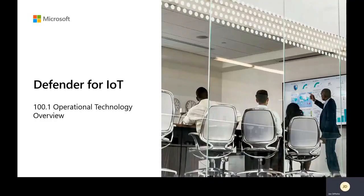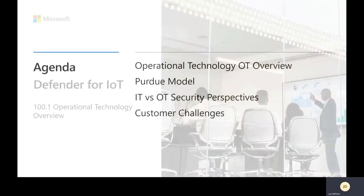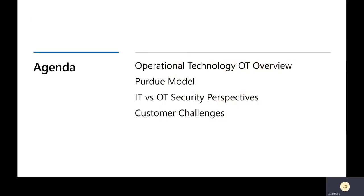Welcome to the session. We'll be talking about operational technology overview, which has a number of different components. One of them is the Purdue model — a way to describe how networking happens and what devices are placed within the network. We'll also discuss IT versus OT security perspectives and the customer challenges we need to address in order to solve part of the problems.